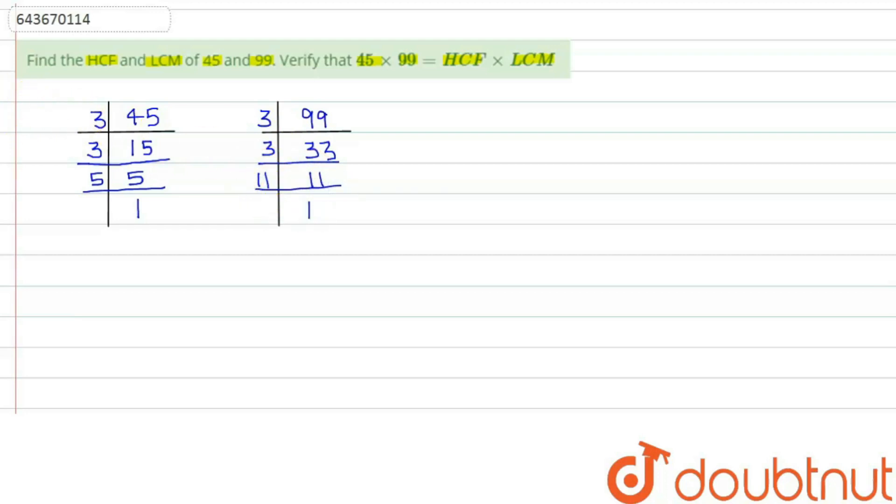Now the HCF of both numbers, which are 45 and 99, will be first of all, write down their factors. For 45 we have 3 into 3 into 5. The factors of 99 are 3 into 3 into 11.